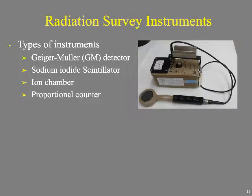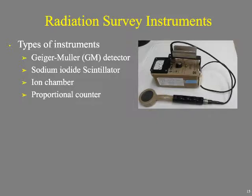Now let's talk about radiation survey instruments. We'll cover the Geiger-Müller tube — particularly the pancake GM — sodium iodine scintillation (which is what well counters use), ion chambers, and proportional counters. Before diving in, these instruments fall into two broad categories: rate meters and scalar meters.